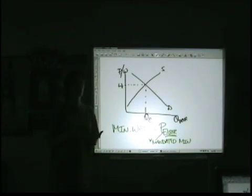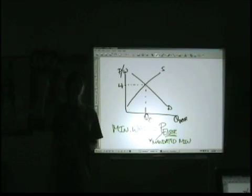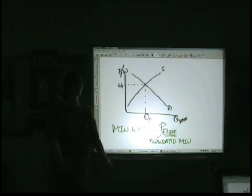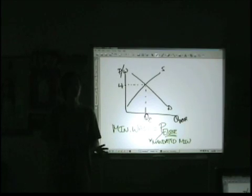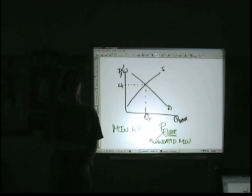If you remember the analysis of floors and ceilings, to be effective, a floor has to be above equilibrium, and a ceiling would have to be below. Going back to the econ material, please review that before the exam — Google it if you lost track of it. The floor is high, the ceiling is low; otherwise they mean nothing.